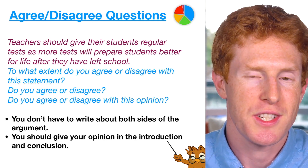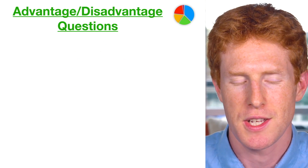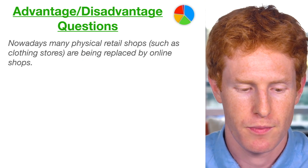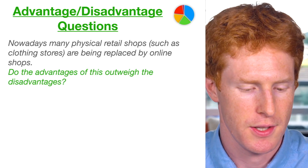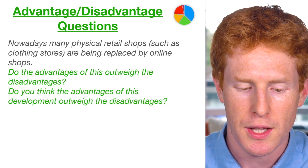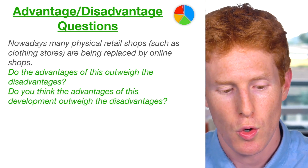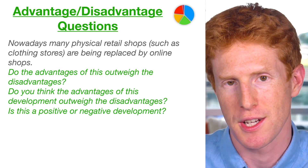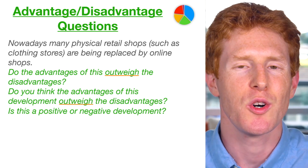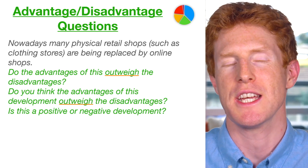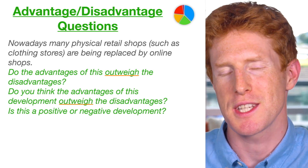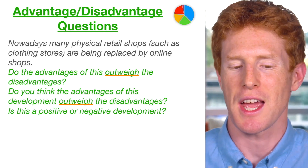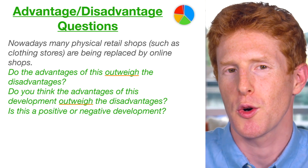The next question type is advantage-disadvantage questions. Here's an example: 'Nowadays many physical retail shops such as clothing stores are being replaced by online shops. Do the advantages of this outweigh the disadvantages?' It could also say 'do you think the advantages outweigh the disadvantages?' or 'is this a positive or negative development?' — another way of asking the same thing. 'Outweigh' basically means which is bigger or more important — the advantages or disadvantages — and the examiner wants to see your opinion on this.